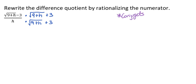Now we could FOIL that out, or we could remember that conjugates allow us to take just the a squared minus the b squared. In this case, our a value would be the square root of 9 plus h, and our b value would be 3.